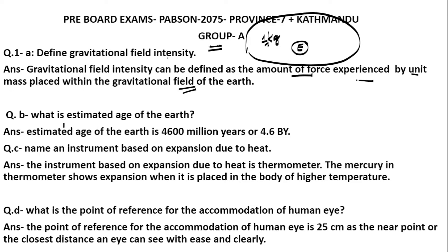Question 1B: What is the estimated age of the earth? The estimated age of the earth is 4,600 million years, or 4.6 billion years.